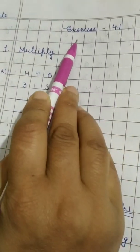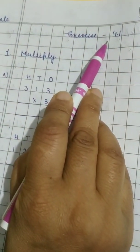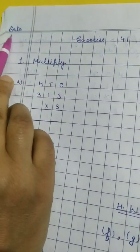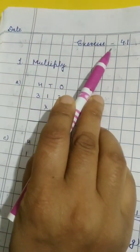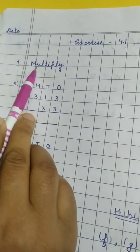Let us do exercise 4.1 in the notebook. In the same way just write the date then exercise 4.1. Question number 1 is multiply.